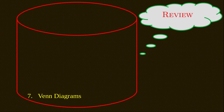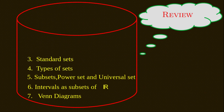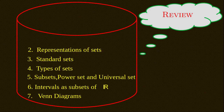Today's class is over. So far we have discussed seven things: the seventh point is Venn diagrams, the sixth is intervals, the fifth is subsets, power set, and superset, the fourth is types of sets, the third is standard sets like natural numbers and whole numbers, the second is representation of sets using roster form and set builder form, and the first is the definition of a set and its symbols.